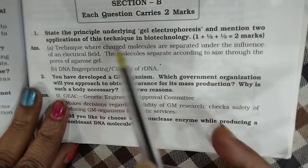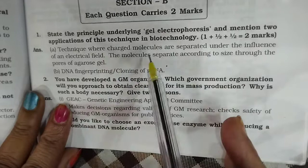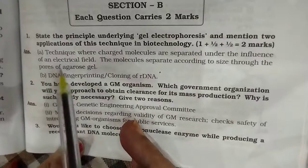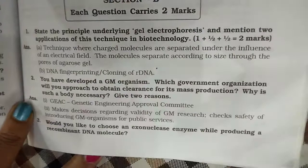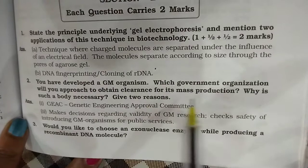Now we come to Section B, which carries two marks. Question one: State the principle concerned with gel electrophoresis and mention two applications of this technique in biotechnology. Question two: You have developed a genetically modified organism — which government organization will you approach to obtain clearance for its mass production, and why is such a body necessary? Give two reasons.